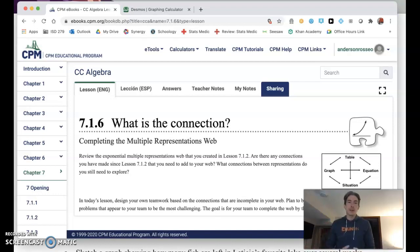Hey everyone, it's Mr. Anderson here. Today we're getting together to talk about section 7.1.6 from our CPM Common Core Algebra eBook. Our goal today is to take some situation problems and turn them into graphs and equations, because if we can turn them into models that we can visualize, that might help us do some problem solving.